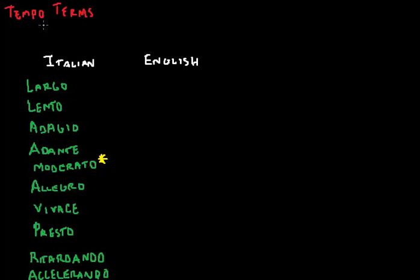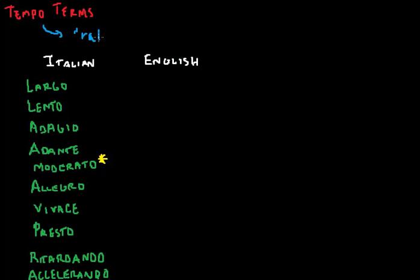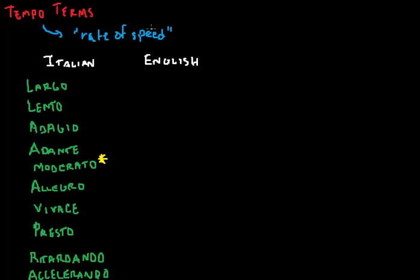Tempo is an Italian word meaning rate of speed. Tempo marks let us know how fast or how slow a piece should be played. These tempo marks are written in Italian, so you're going to have to translate them.